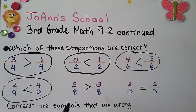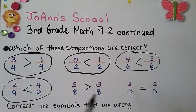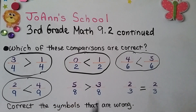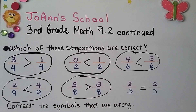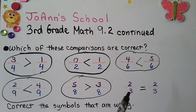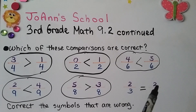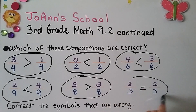Here we have 5 eighths is greater than 3 eighths — both have denominator 8. Is 5 greater than 3? Yes, that's true — so we can circle that one, it's already correct. And the last one: 2 thirds is equal to 2 thirds. They have the same denominator and the same numerator, so yes, they are equal to each other — 2 equals 2. So that one is correct.